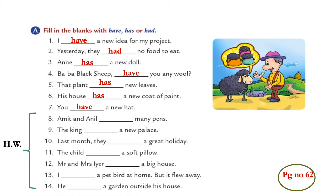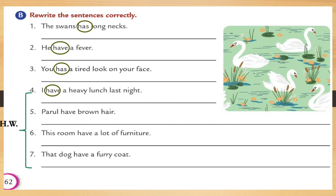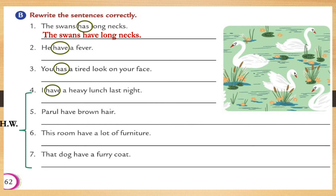Now the rest of the parts you can do yourself. Next question: rewrite the sentences correctly. These sentences are incorrect — you have to correct them. First one: The swans has long necks. Swans is a plural noun and they have used has. It is plural and present tense, so we will use have. The swans have long necks. This is the way you have to write the correct sentences.